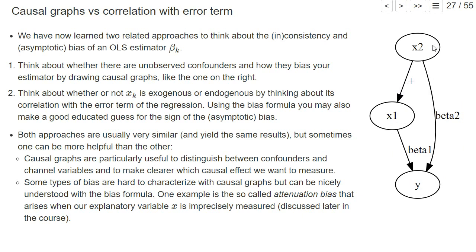They make it more clear which exact cause and effect you want to measure. However, there are problems that lead to a bias which cannot so nicely be illustrated with a graph. One example is if your explanatory variable is measured in a noisy way.